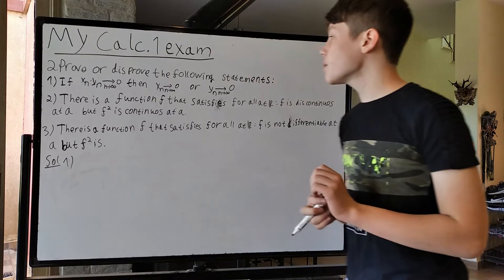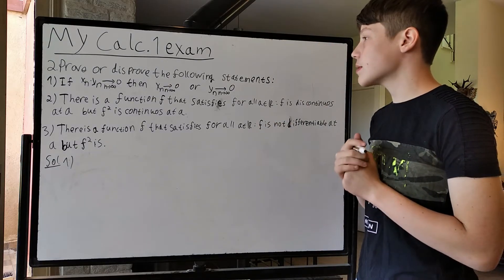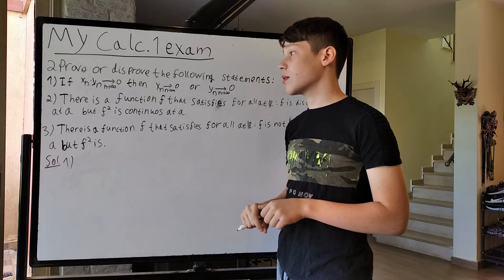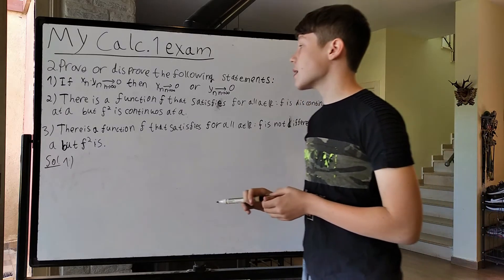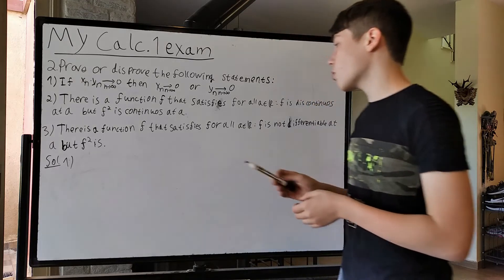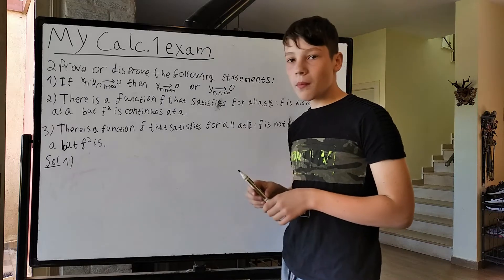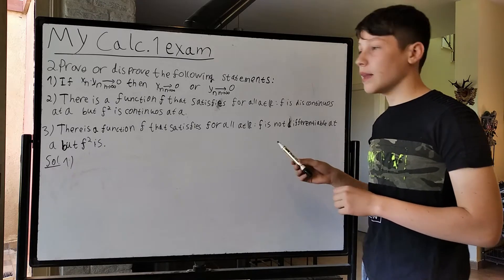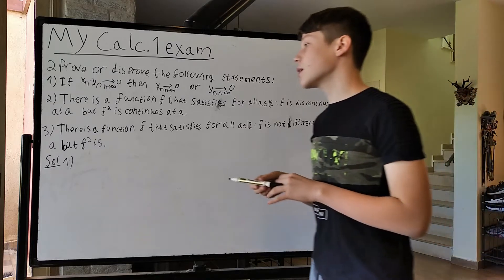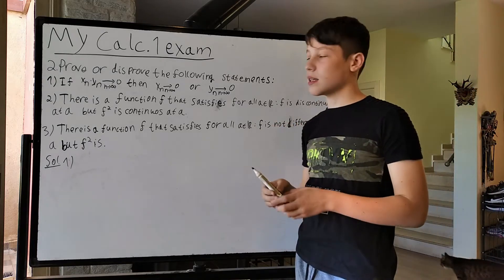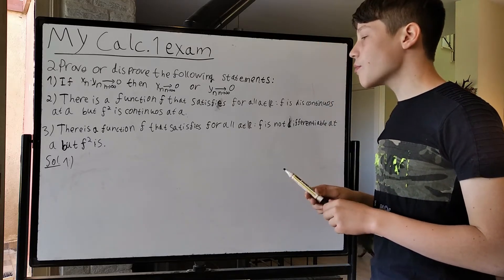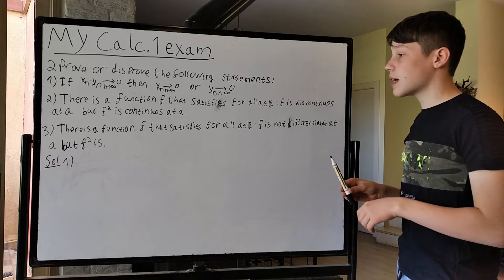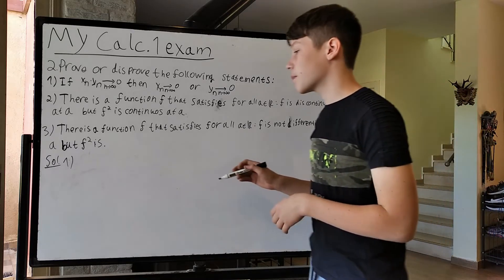Okay, this is the next question. We need to prove or disprove the following statements — there are three of them. The first states: if x_n · y_n → 0 as n → ∞, then x_n → 0 or y_n → 0. The second: there is a function f such that for all real a, f is discontinuous at a but f² is continuous at a. And number three: there is a function f such that for all real a, f is not differentiable at a but f² is differentiable at a.